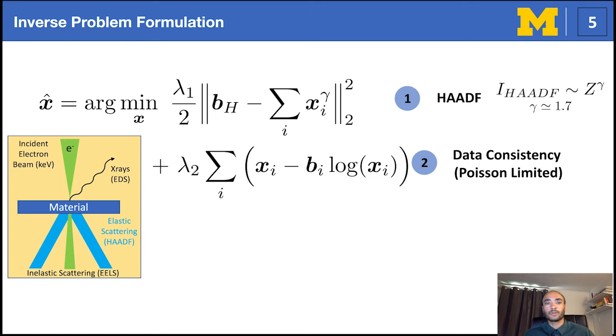Further, inspired by the field of compressed sensing, we also impose a channel-wise total variation to ensure that the resulting chemical maps contain minimal noise. Overall, these three terms are the bases that make up fused multimodal electron microscopy.